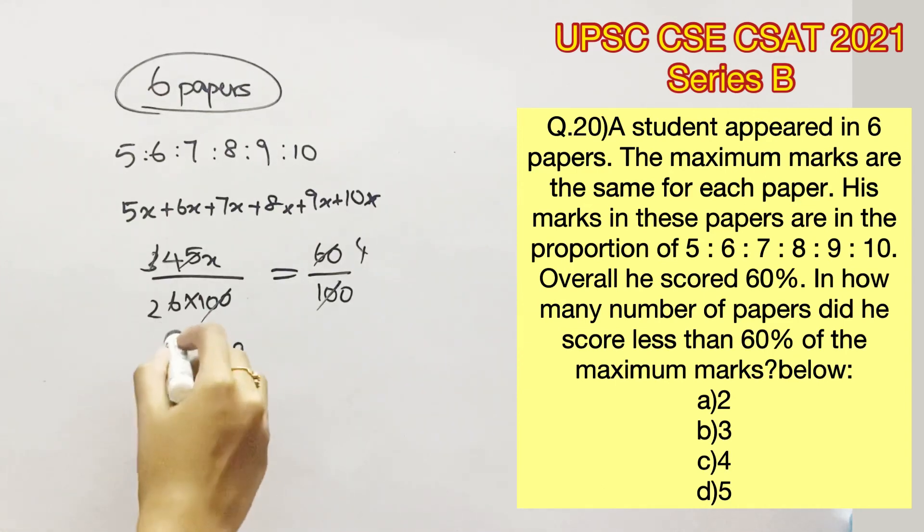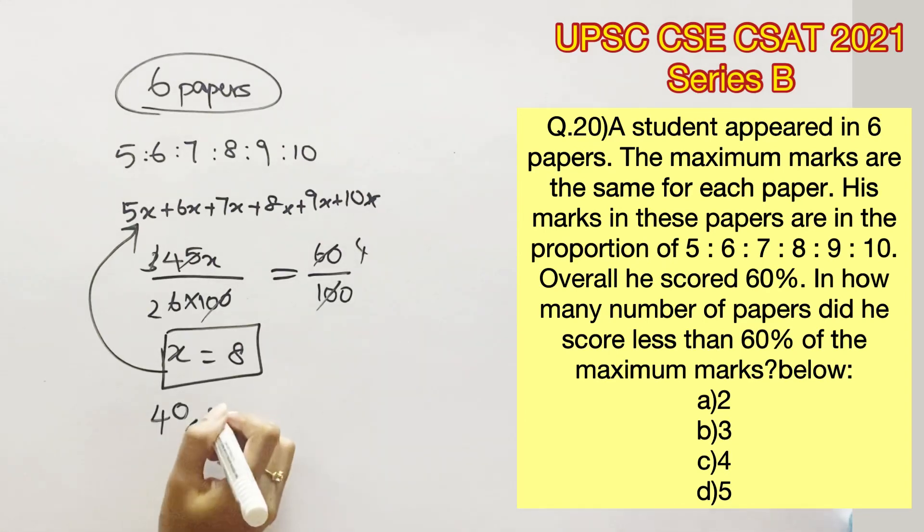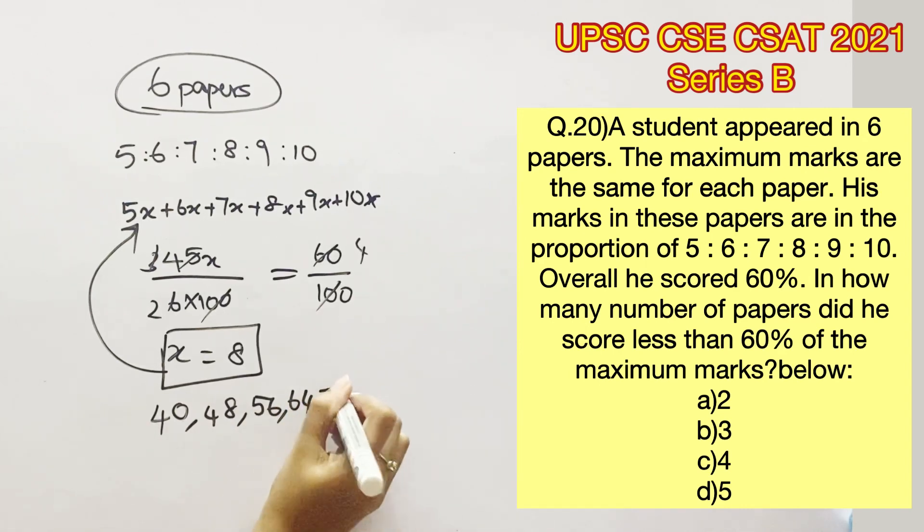Now we can substitute this constant of proportion in individual papers and find out which papers have less than 60% of the marks. For 5x we get 40, 6x is 48, 7x is 56, 8x is 64, 9x is 72 and 10x is 80.